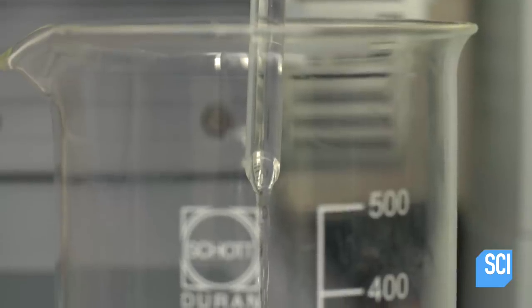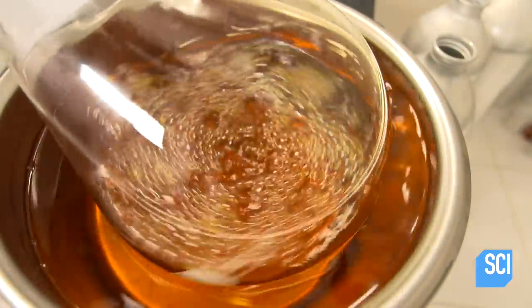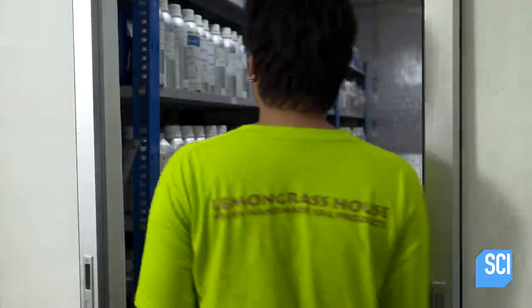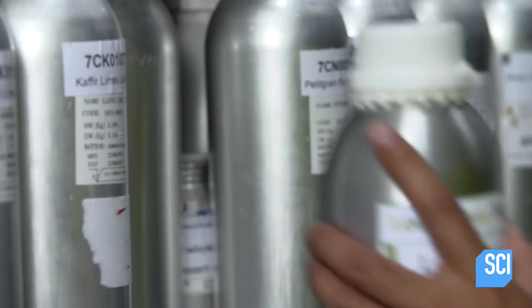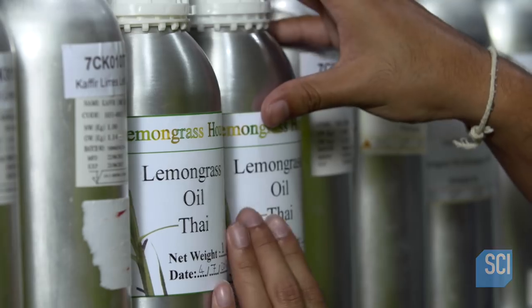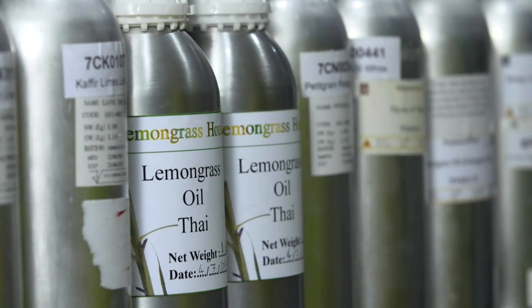The rotary vacuum evaporator processes roughly two to three quarts of fragrant oil per hour. They store the lemongrass oil in a cold room with other essential oils. Like fine wine, it must be kept cool or it could spoil and ruin its bouquet.